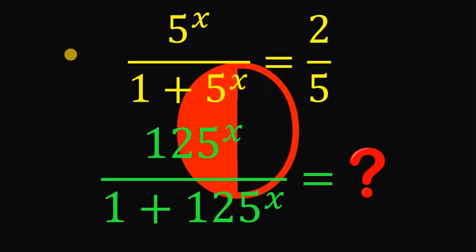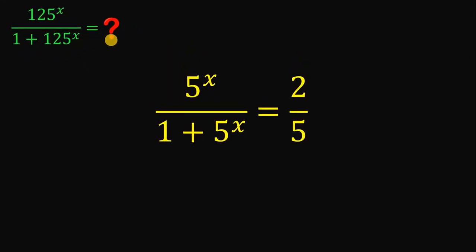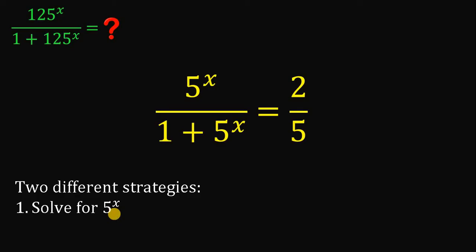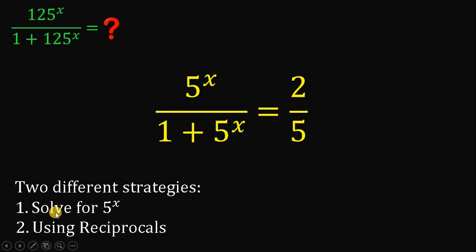Now let's answer this question together. Given that 5 raised to x over 1 plus 5 raised to x equals 2 over 5, our goal is to find the value of the expression 125 raised to x over 1 plus 125 raised to x. In this video, I provide two different solutions. The first solution uses the value of 5 raised to x, and the second strategy uses reciprocals. Let's first use the first strategy, where we solve for 5 raised to x and then substitute into this expression.